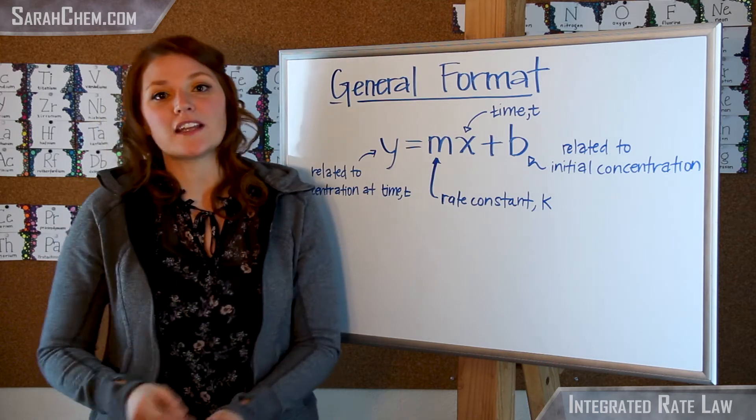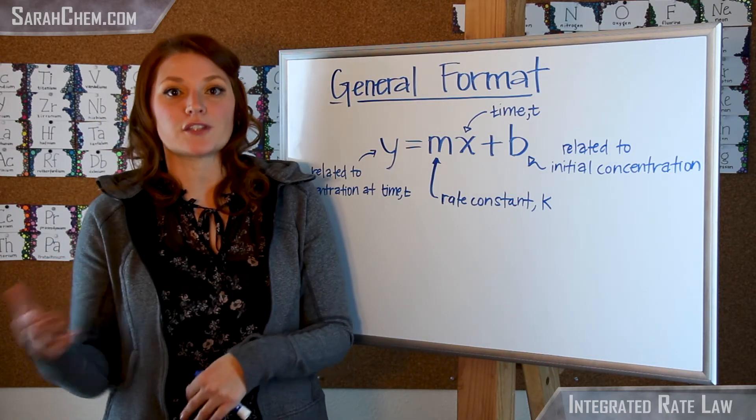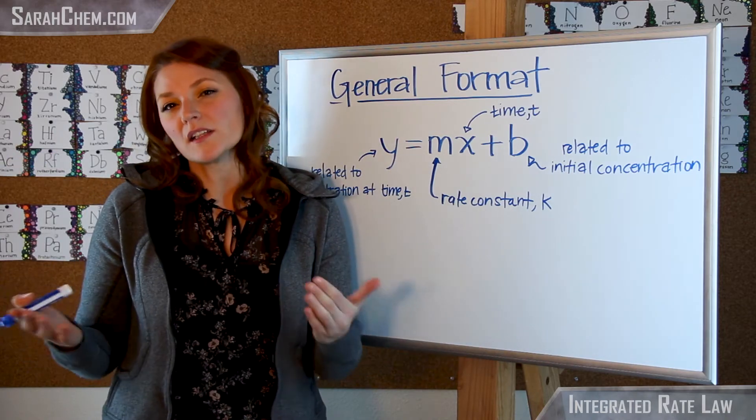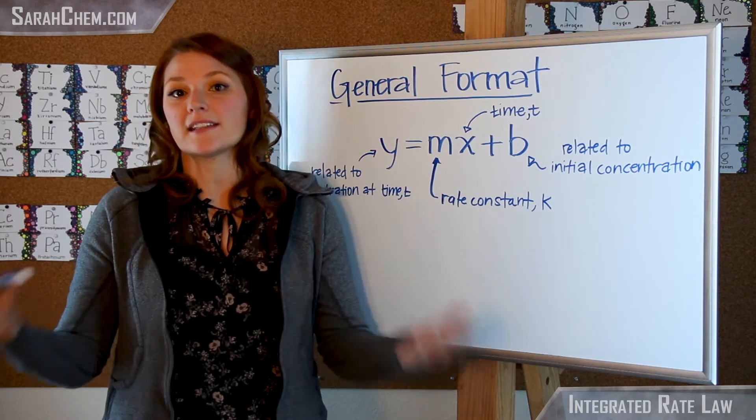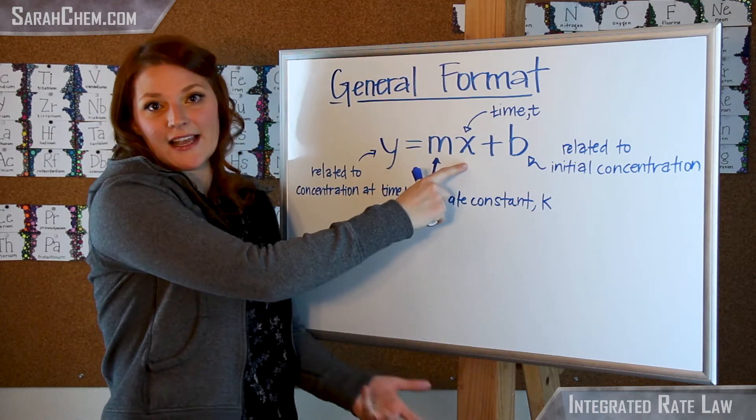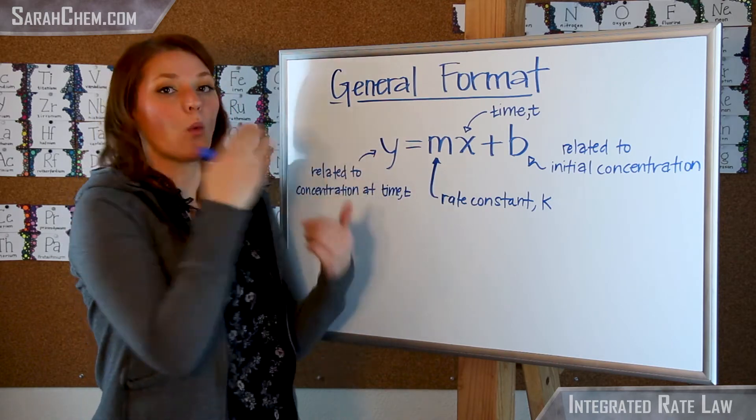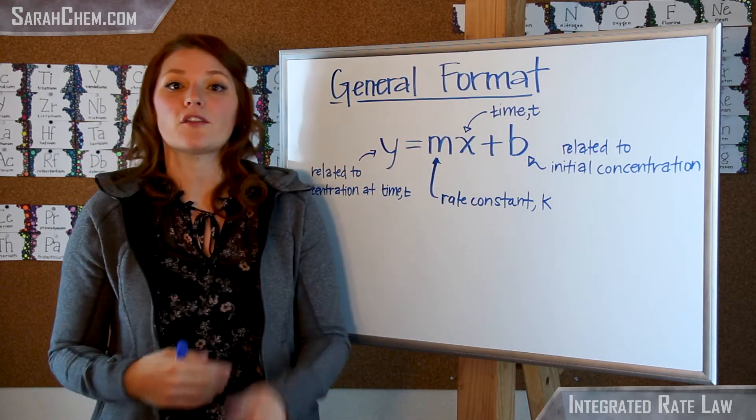So Y is going to relate to the concentration of the reactant of interest at a particular time point. Let's say you want to figure out what is the concentration of my reactant after 10 seconds has elapsed. You would then plug in for X, 10 seconds. So X here is representative of time, and then you'd be able to figure out what the actual concentration is based on the value of Y.